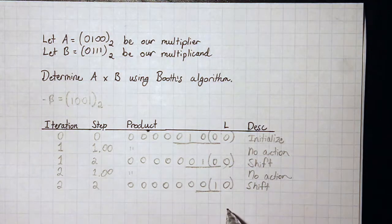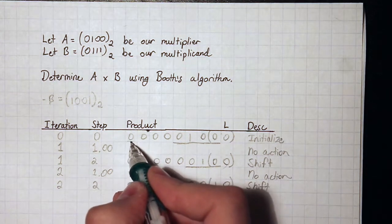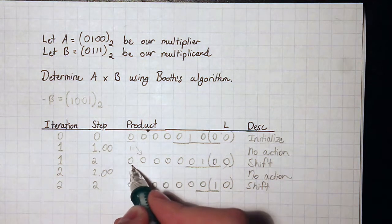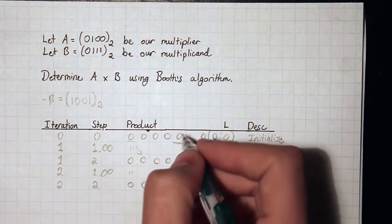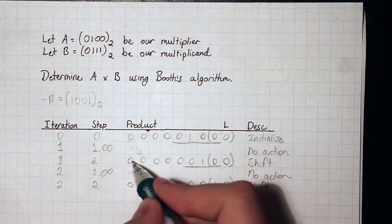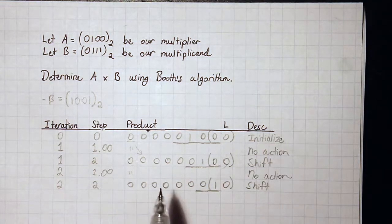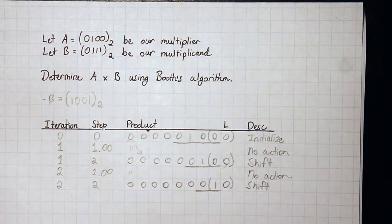Worth noting: when we shift zeros onto the left, that's only because our most significant bit was a 0. When we do our shift and this bit moves over, we shift in a 0. But if the MSB had been a 1, we would shift in a 1. This is because we want to preserve the sign of our product register, since it's represented in two's complement — this is an arithmetic right shift. If the sign bit is 1 and we shifted in a 0, we'd incorrectly make the value positive.